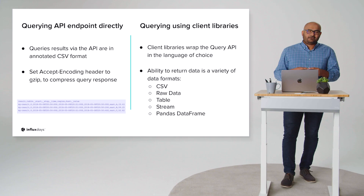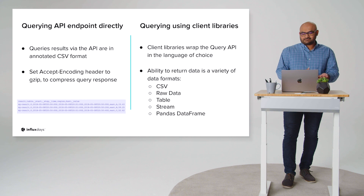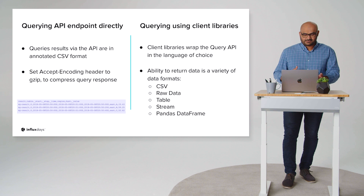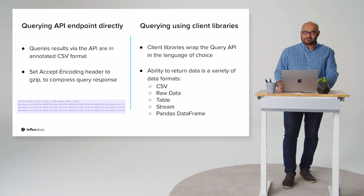Let's think back to our fictional utility company. One of their value adds is a client app where users can see and visualize their usage over time and even compare it against their zip code or the type of home they have. The app can use a client library to make queries and pull data against the relevant buckets. They can use tags to narrow down queries to zip codes or home types, and the data can be as granular or aggregated as needed.